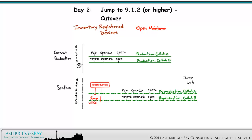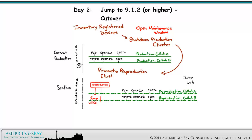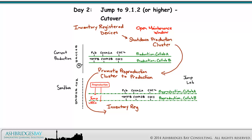Then, with the maintenance window open, we'll shut down the production cluster in an orderly fashion in case we need to fail back. We promote the pre-production cluster to production by changing the vNet configuration for the pre-production VMs to Production Collab A and Production Collab B. Once promoted, we'll inventory registered devices to ensure everything registers and do some tests. If everything looks good, we'll go with the new software; otherwise, we'll roll back to the current production software.